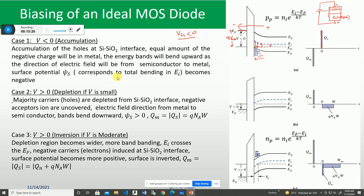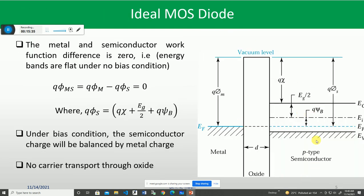If Vg equals zero, the bands become flat — that is the flat band condition. For negative gate voltage, the bands bend upward. For zero gate voltage, the bands remain flat. When a positive voltage is applied, the bands start bending downward.